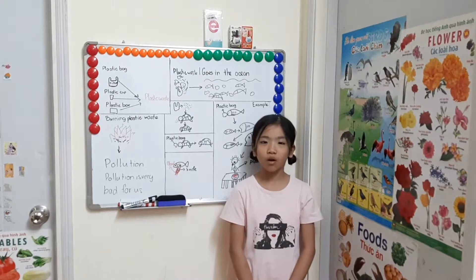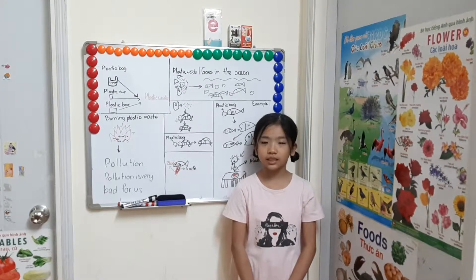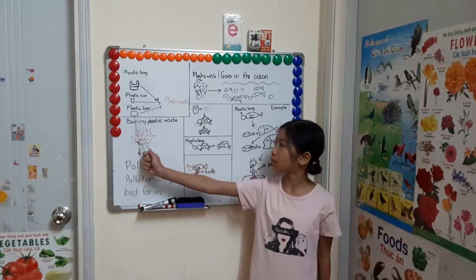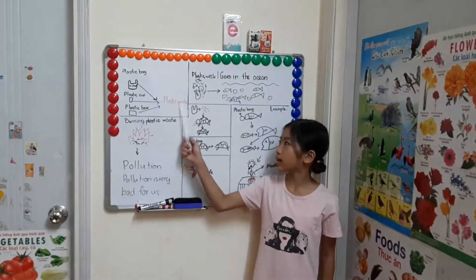Every day we throw away many plastic things. For example, plastic bags, plastic cups, or plastic boxes. This makes plastic waste.